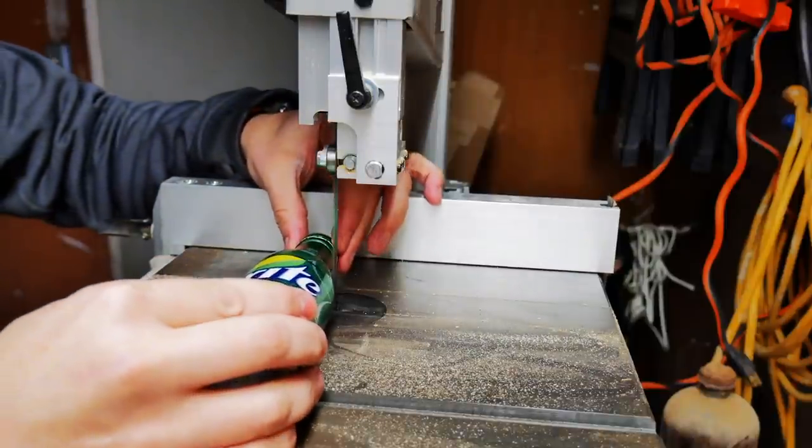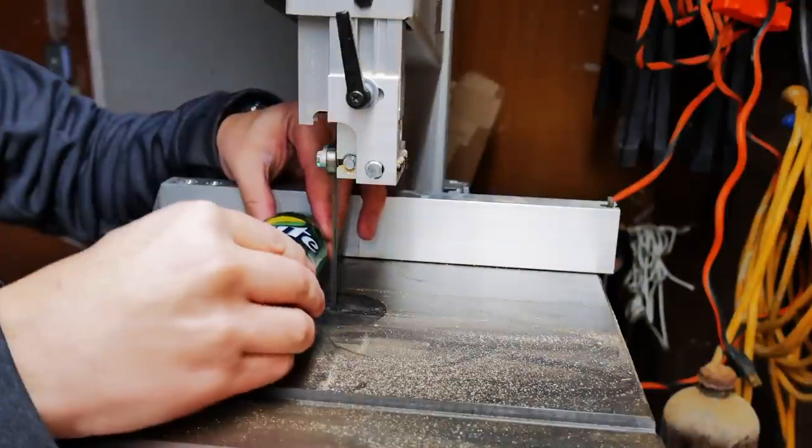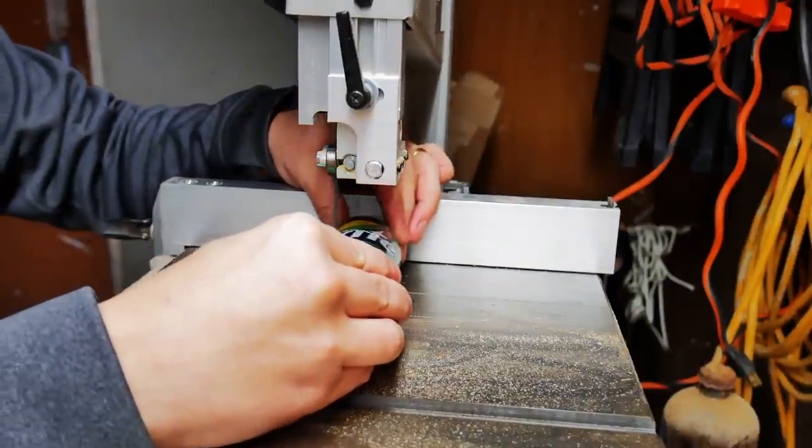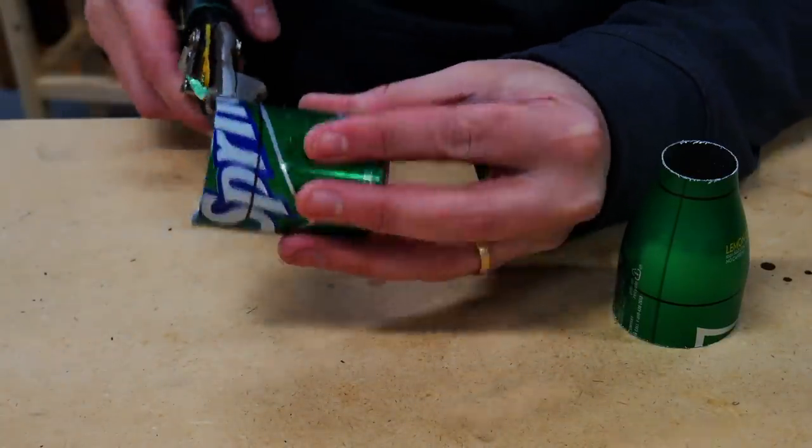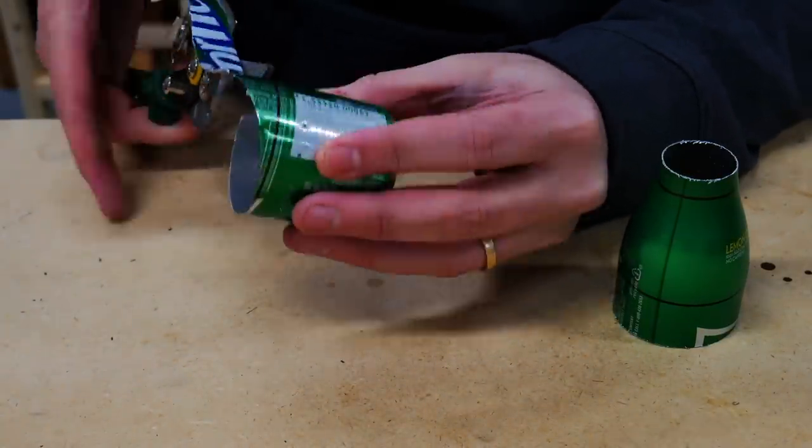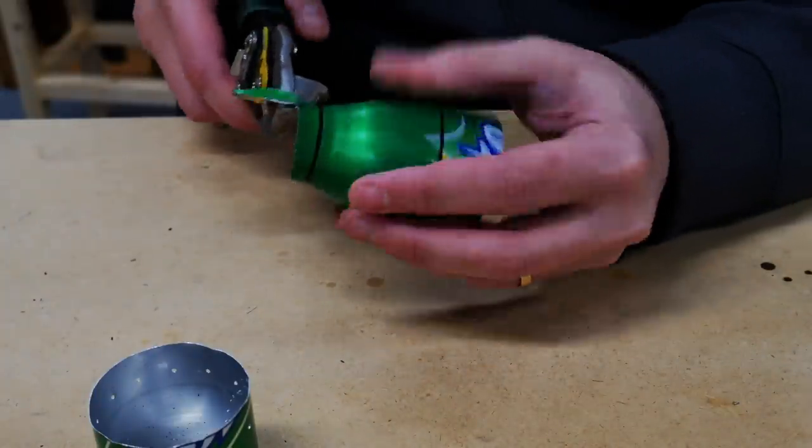I used a bandsaw. You want to be very careful here. Hold it very tightly because this thing being round can spin out on you very easily. But it was right there and it's easy if you do it carefully you'll be fine. And to get close to the lines I use a good pair of tin snips and you can easily cut through this and make really good crisp edges.